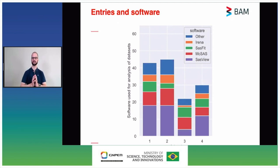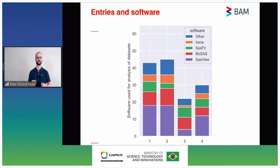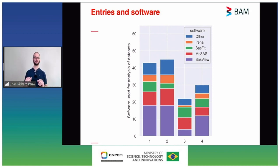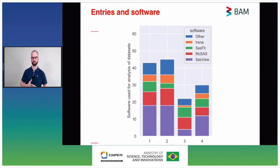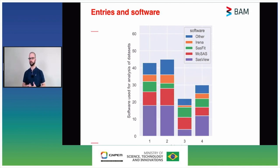After a couple of months we got some entries back. Most people analyzed data sets one and two, which were more straightforward than three and four — both of which had strong structure factor effects. In terms of software, we have a seemingly healthy ecosystem: we received results from all kinds of packages, including homegrown software. On one hand that's good, but on the other hand it causes problems because all these packages report distribution width differently.